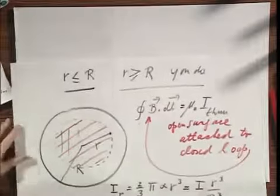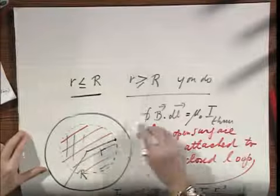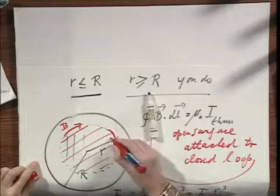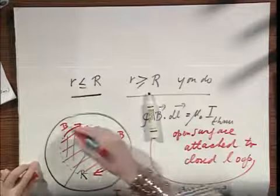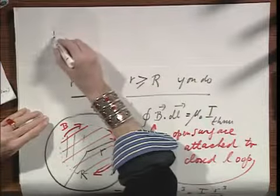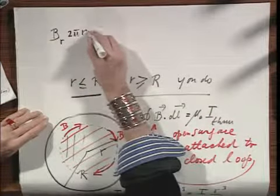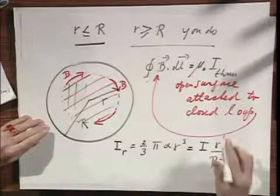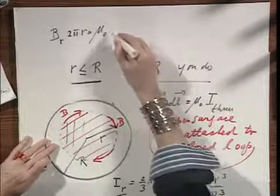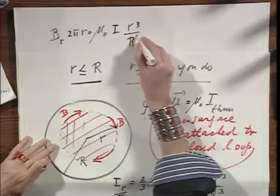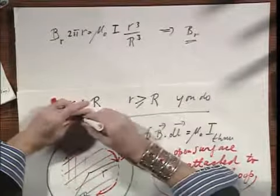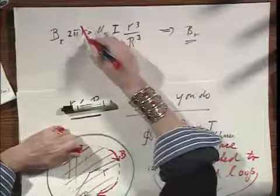So if now we apply Ampere's law, and we go around in this circle, the magnetic field by convention is in this direction. It's everywhere the same because the radius r little r doesn't change. And so we get that B at that distance r times 2π r equals μ₀ times the current going through that flat surface, uniquely determined. And that equals I r³ divided by R³. And so out pops immediately Br. And what you see is that Br is proportional to r².